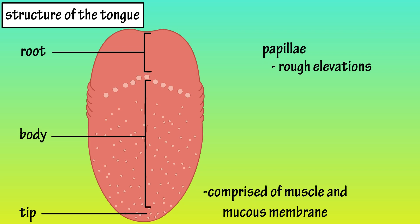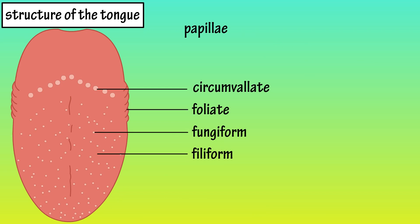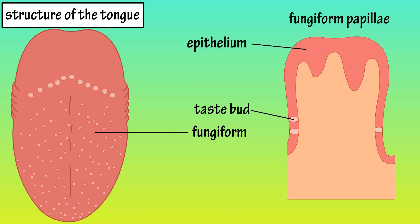There are four types of papillae: fungiform, circumvallate, foliate, and filiform. Fungiform papillae are mushroom-shaped bumps that are found near the tip and sides of the tongue. Each of these contains only a few taste buds.